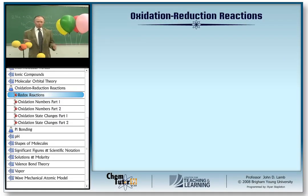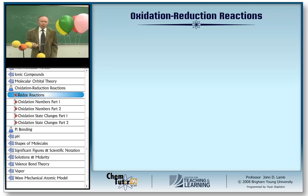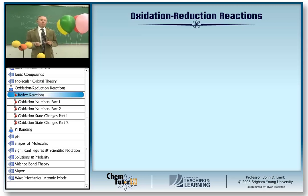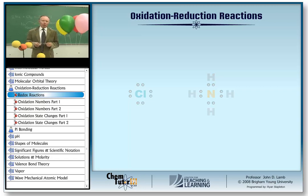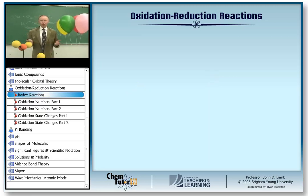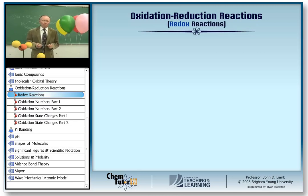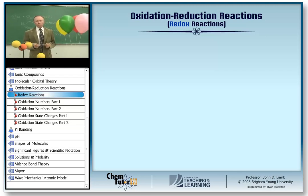When it comes right down to it, there are basically two types of reactions that we normally deal with in nature. The first is acid-base reactions — reactions in which protons are passed between chemical species. The second type is the topic for today: oxidation-reduction reactions, or redox reactions for short. In this type of reaction, it's not protons but electrons that are exchanged between chemical species.